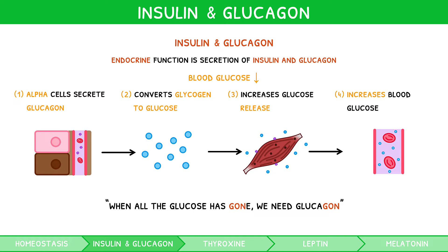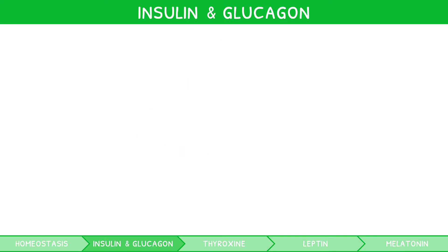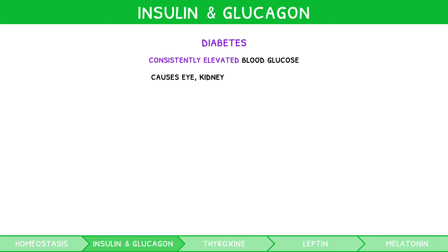However, this feedback mechanism can fail, causing serious consequences. Failure of glucose regulation can lead to a condition known as diabetes. It is characterized by consistently elevated blood glucose, resulting in damage to the eyes, kidneys, and feet. It can be classified as type 1 or type 2.